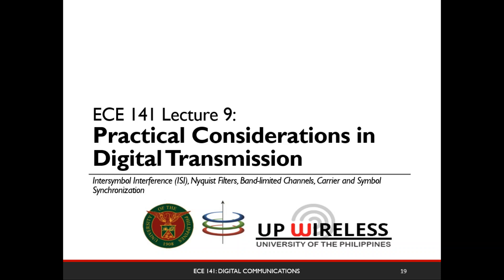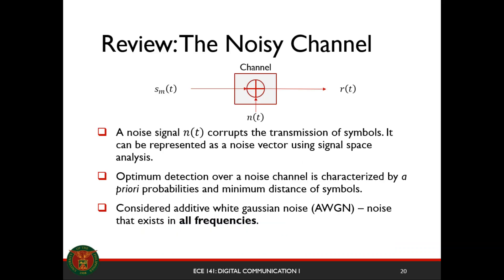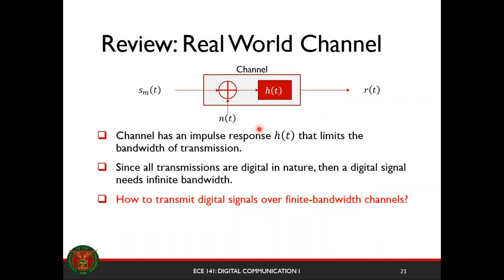Welcome to the second part of Lecture 9 of ECE 141, Practical Considerations in Digital Transmission. As a review of the noisy channel, we treated the channel as just a block that adds noise. Your transmitted pulse signal is received with some noise, N of T. In reality, a real-world channel is band-limited, and therefore it has an impulse response, H of T.